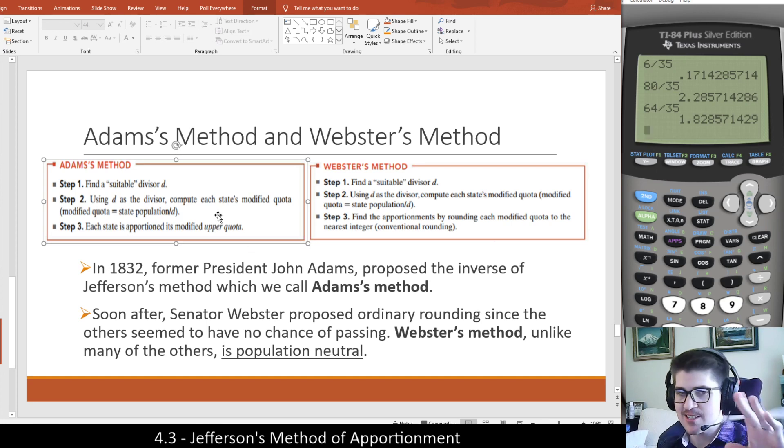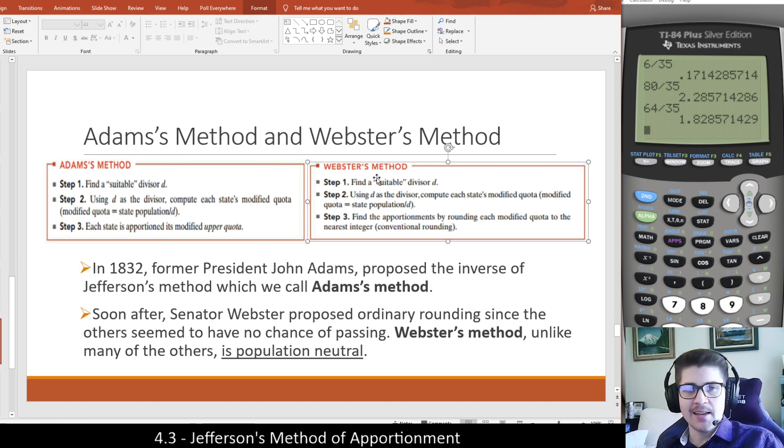Every one of these procedures is the same as Jefferson's method because they use the modified divisor method. Webster's method, since Jefferson's rounds down and Adams rounds up, Webster rounds conventionally. Find a suitable divisor, compute the modified quota, and lastly, find the apportionment using a rounded quota with conventional rounding.